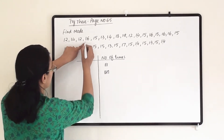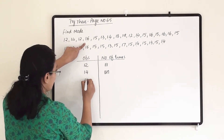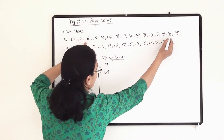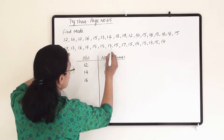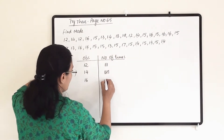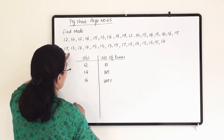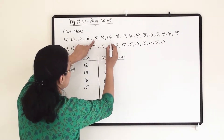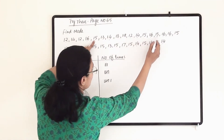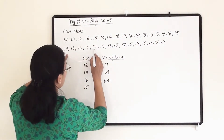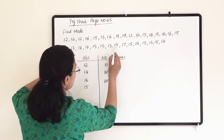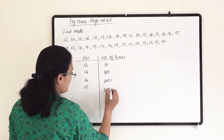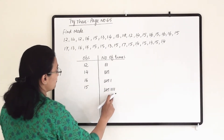Then 15 — let us count: one, two, three, four, five, six, seven, eight, nine. So 15 is coming nine times; five marks and four more. Then 13 — it is coming four times. 18 is coming only once. 19 is coming only once. 17 is coming twice. Let us recount 15 carefully one more time — one, two, three, four, five, six, seven, eight, nine, ten. So 15 is actually coming 10 times.